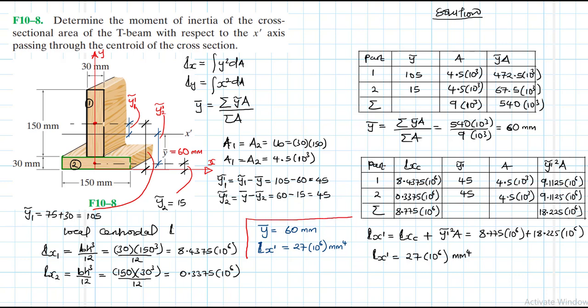To summarize: Y-bar equals 60 millimeters, and I sub X-prime equals 27 times 10 to the power 6 millimeters to the power 4. That is the final solution for our problem. We found the centroidal distance along the Y axis and the moment of inertia about the X-prime axis. I hope the video was helpful. If it was, give me a thumbs up, like my video, continue subscribing and liking my channel. Bye bye and see you in my next screencast.